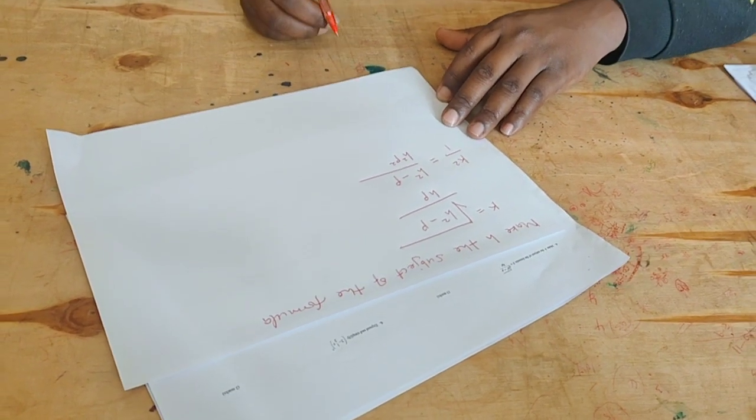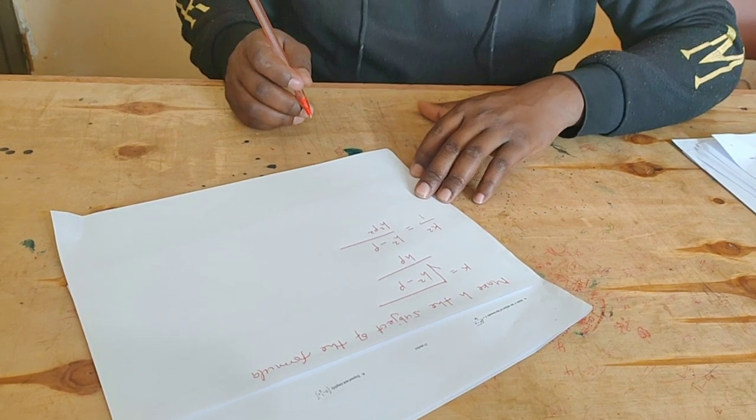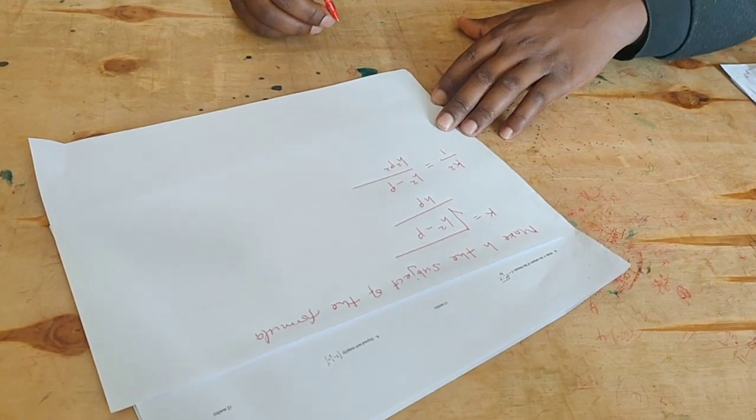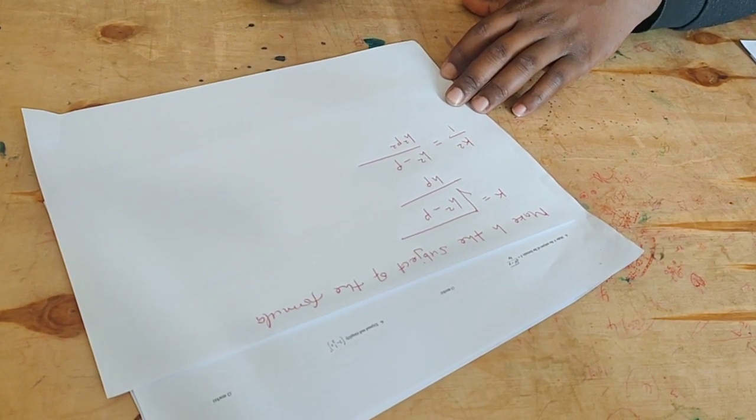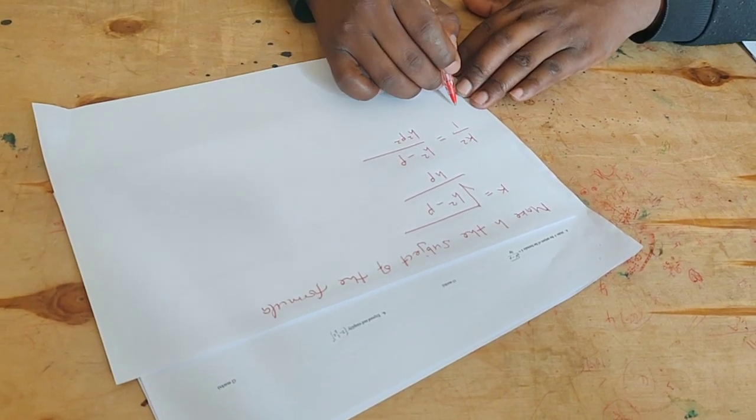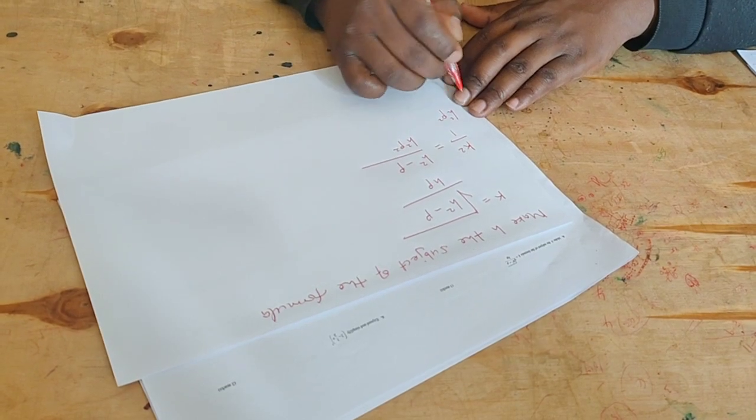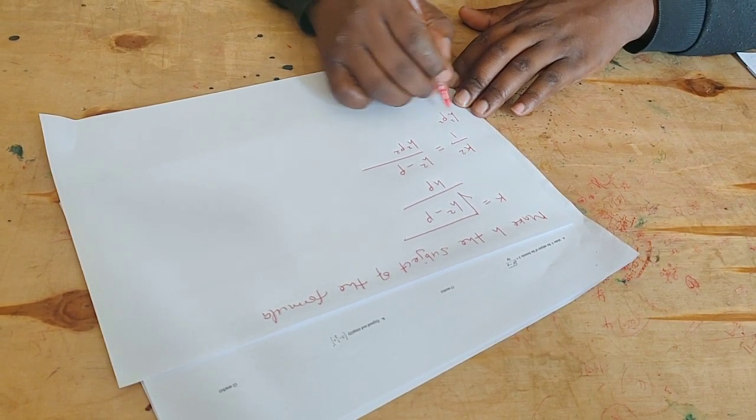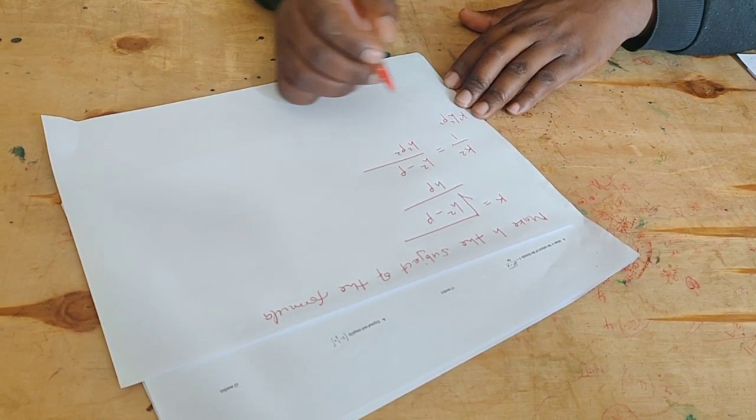So h squared p squared times k squared equals h squared minus p. The second step: collect the like terms together.